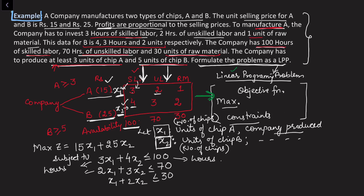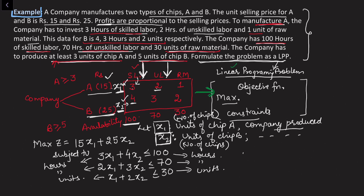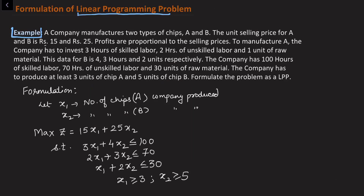The second constraint compares hours on both sides. The third constraint is for raw material: x1 + 2x2 ≤ 30 — here both sides represent units of raw material. In addition, there are restrictions on the decision variables. The company must produce at least three units of chip A, so x1 ≥ 3, and x2 ≥ 5 for chip B.